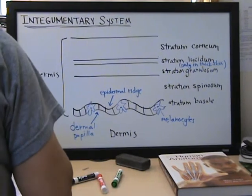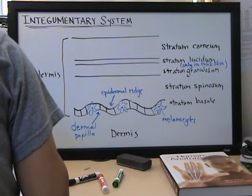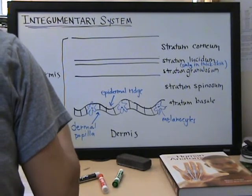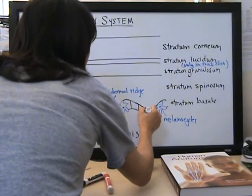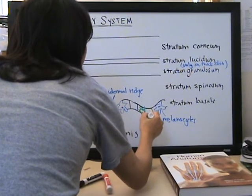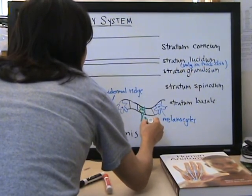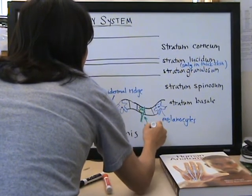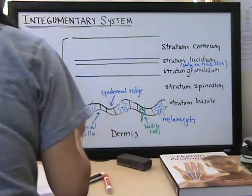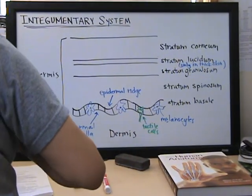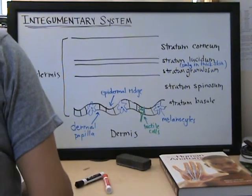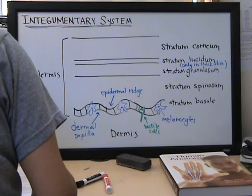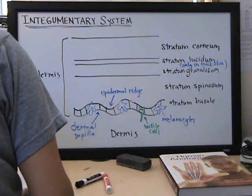Let's see, what else do we have? We have also specialized cells called tactile cells. Important for touch, and these are part of the nervous system, sometimes called the Merkel cells. And they're scattered amongst the cells of the stratum vasalia and, again, are sensitive to touch.